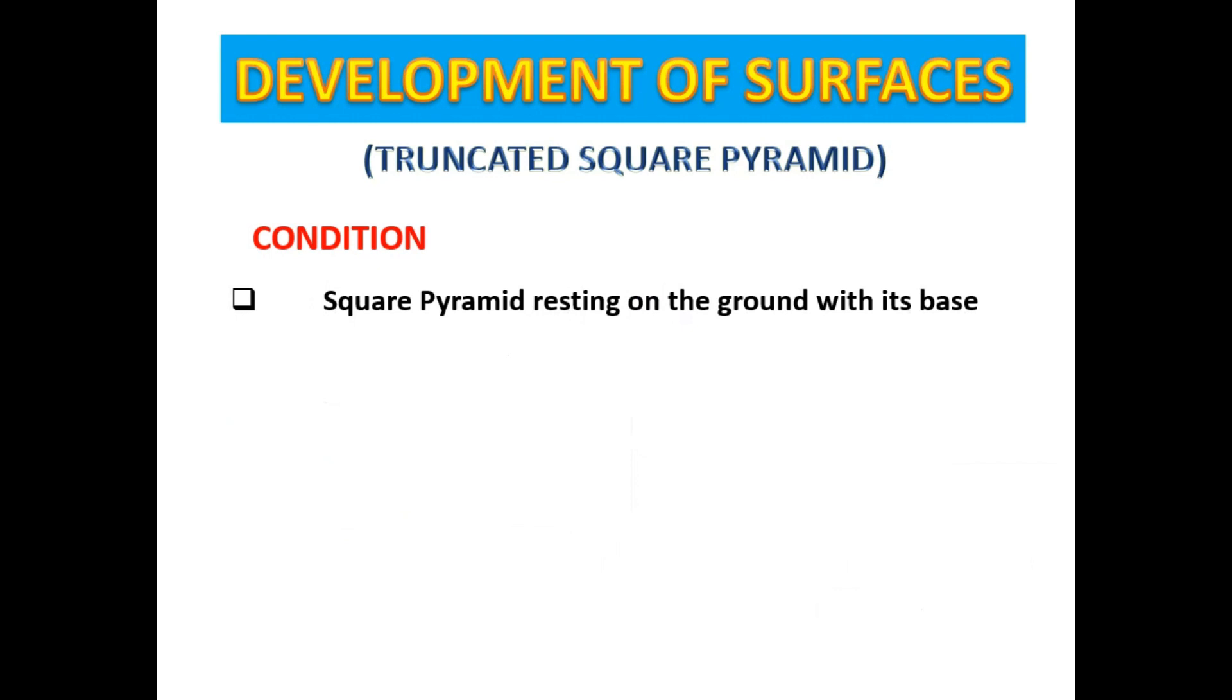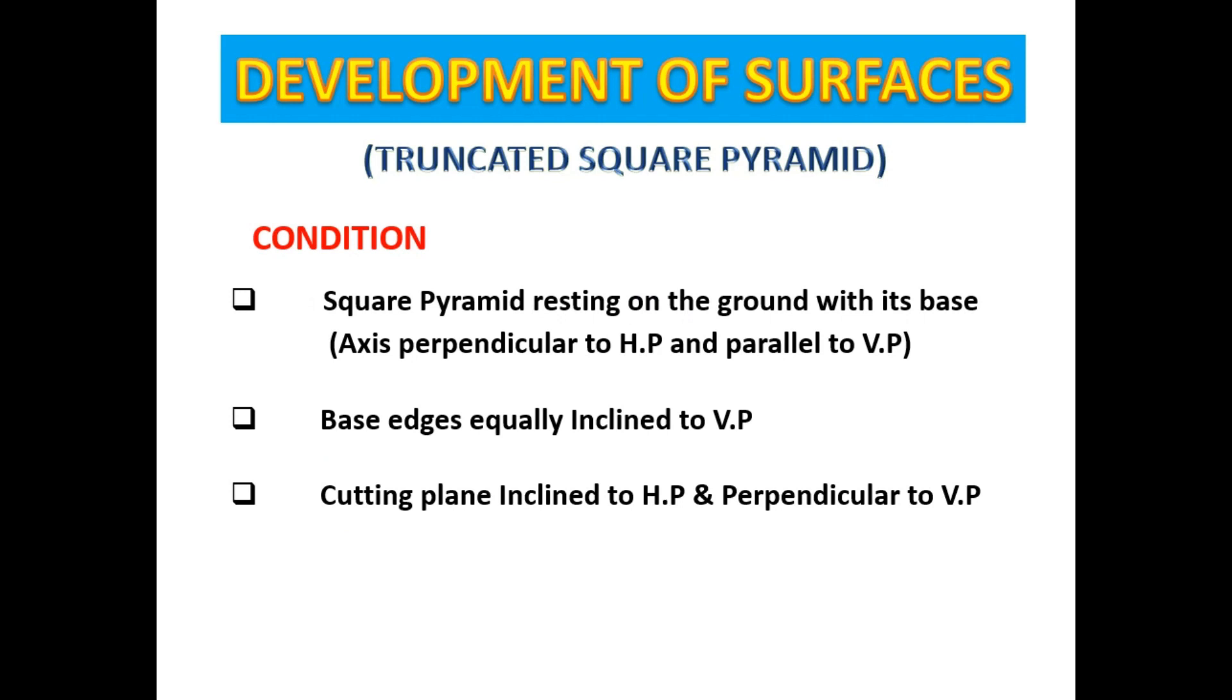When a square pyramid is resting on the ground with its base, the axis is perpendicular to HP and parallel to VP. The base edges of the pyramid are equally inclined to VP. The cutting plane is inclined to HP and perpendicular to VP.